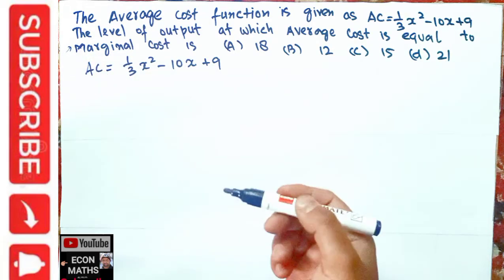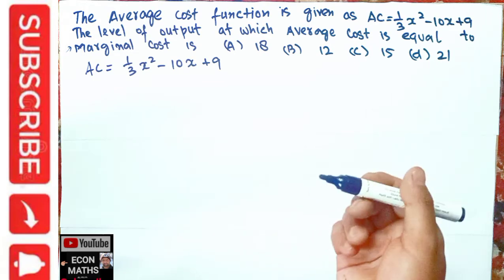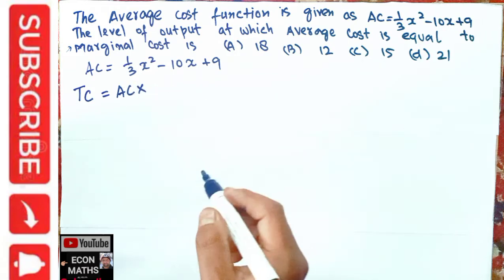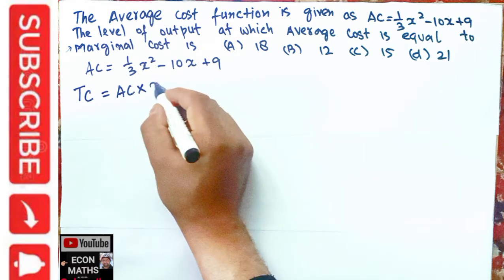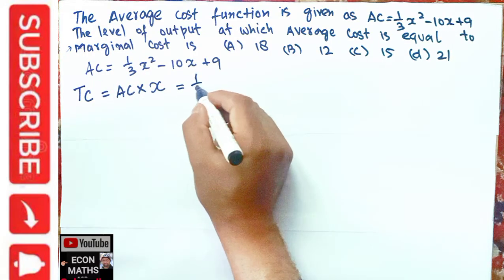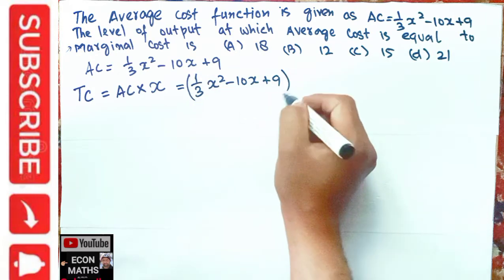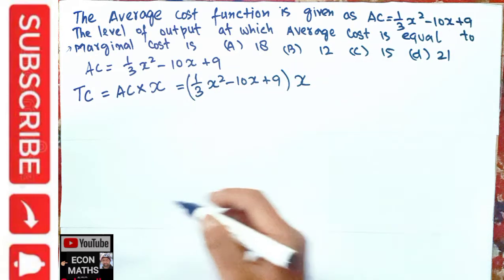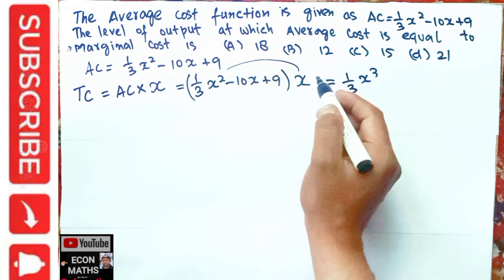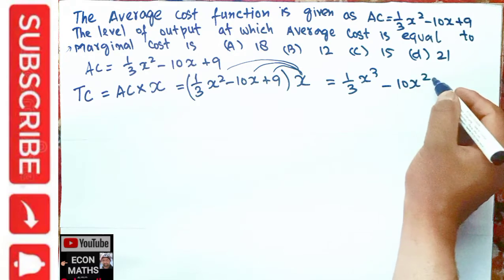We have to find the marginal cost. Since we are given the average cost, we first find the total cost. Total cost is simply average cost times quantity x. So our average cost is (1/3)x² - 10x + 9, and we multiply it by x to get total cost = (1/3)x³ - 10x² + 9x.